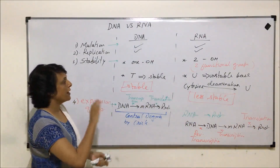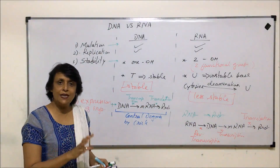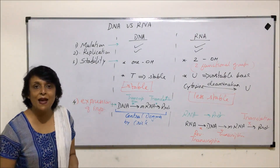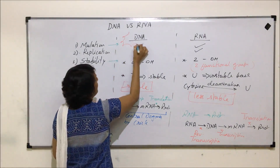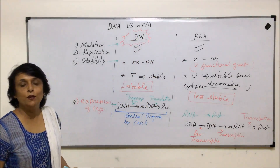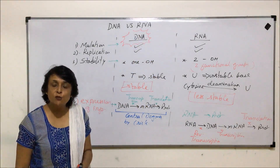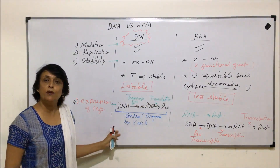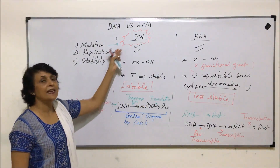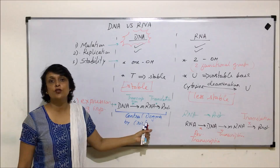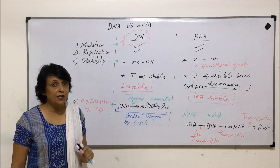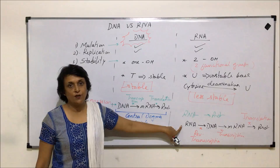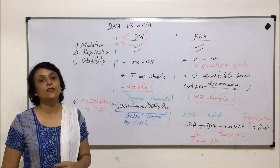Comparing these two molecules, we can conclude that the more stable molecule which is able to express its information in an easier manner should be the genetic material. With the help of experiments by Griffith and Hershey and Chase, and by examining these properties, we confirm that DNA is the genetic material as it is more stable. However, RNA is the genetic material in certain organisms such as TMV, which follow the reverse transcription method of expression.